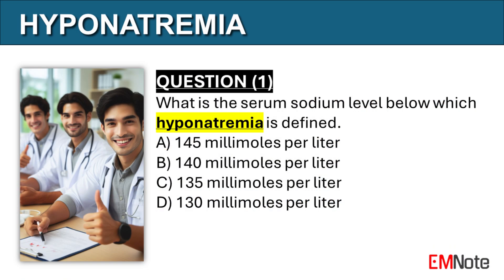Question 1: What is the serum sodium level below which hyponatremia is defined? The correct answer is C. Hyponatremia is defined as a serum sodium level below 135 millimoles per liter.